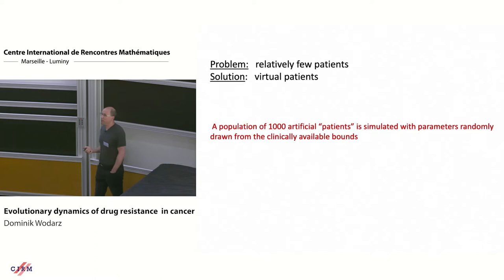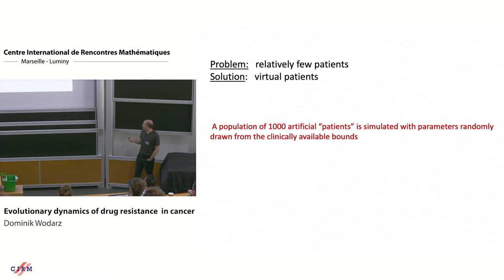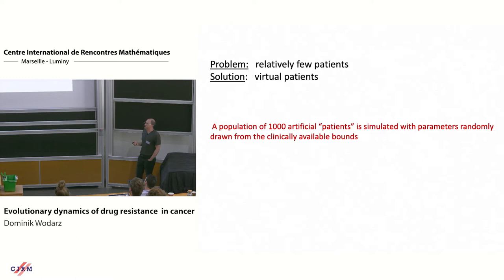One of the problems with the study is there's a lot of work and not that many patients. But we have a certain number of patients, and we can take these parameters and use that parameter space to make virtual patients. By randomly drawing parameters from the available data, we created a thousand artificial patients to explore the evolutionary dynamics and what kinds of outcomes are possible. This has its own problems - if parameters are correlated, random drawing isn't ideal - but it's something one can try and do.